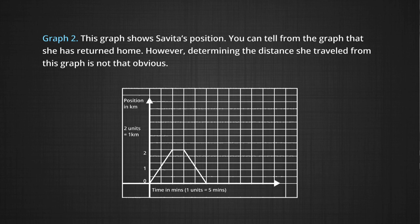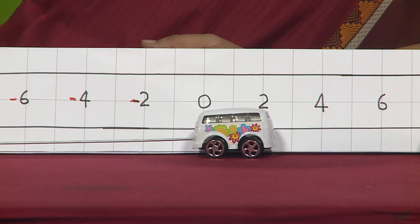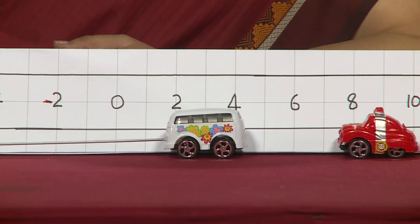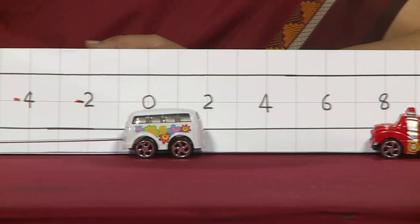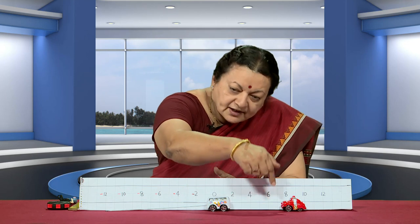Now, both these graphs are correct — the distance-time as well as the position-time graph. And if you carefully understand it, they are showing you something different. In the distance-time graph, you have no notion as to where this person is at the end of 25 minutes. While the position-time graph is able to tell you that this person is back home — that means at the starting point. From our example, it would mean that this person has travelled a certain distance this way and has come back.